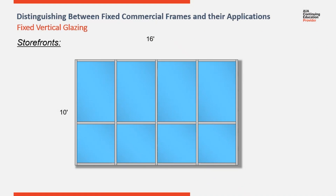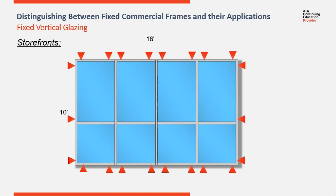This is an example of a typical storefront application. Typically, storefronts are used up to maybe 10 feet in height for the most. Vertical spacing is a range of four foot on center. Lites of glass on top of the horizontal shouldn't exceed roughly about 5 feet due to dead load considerations.